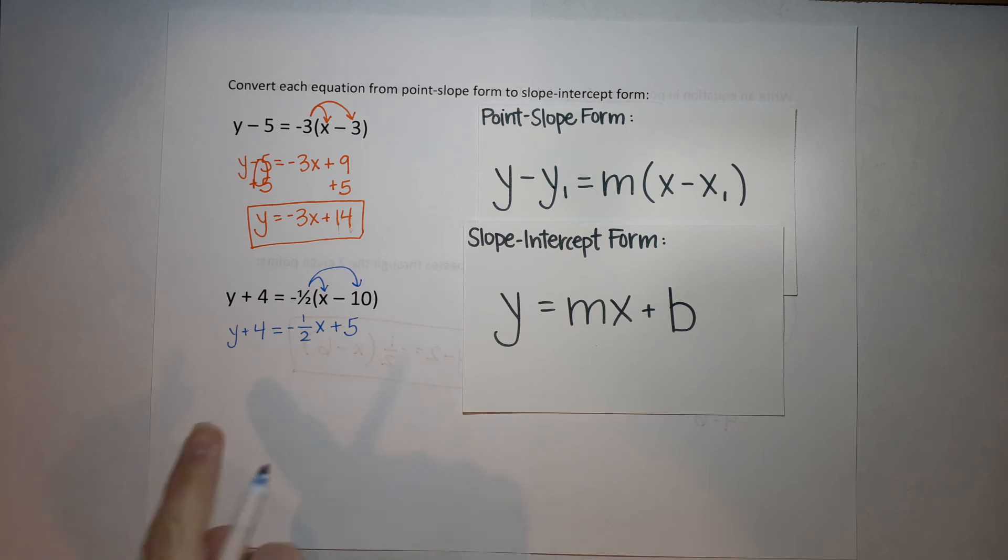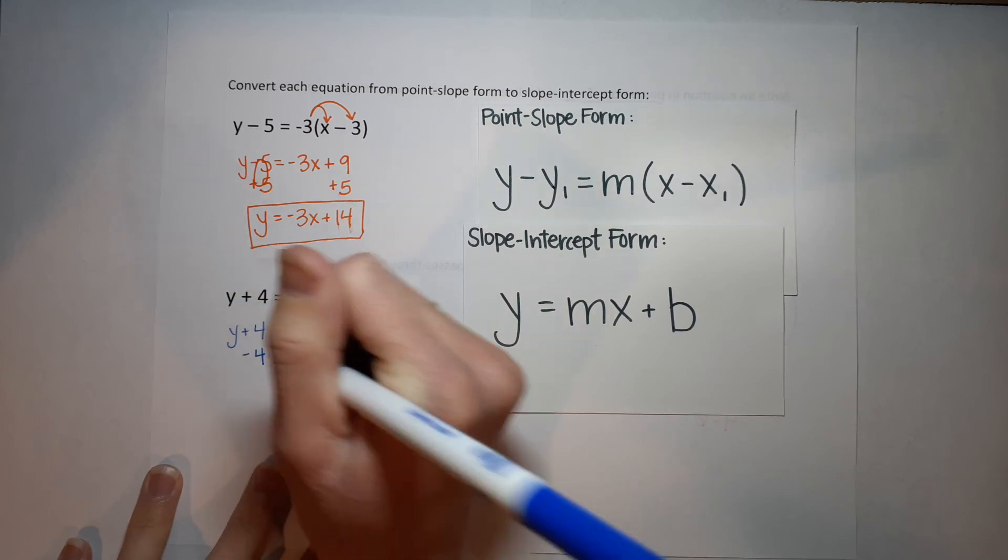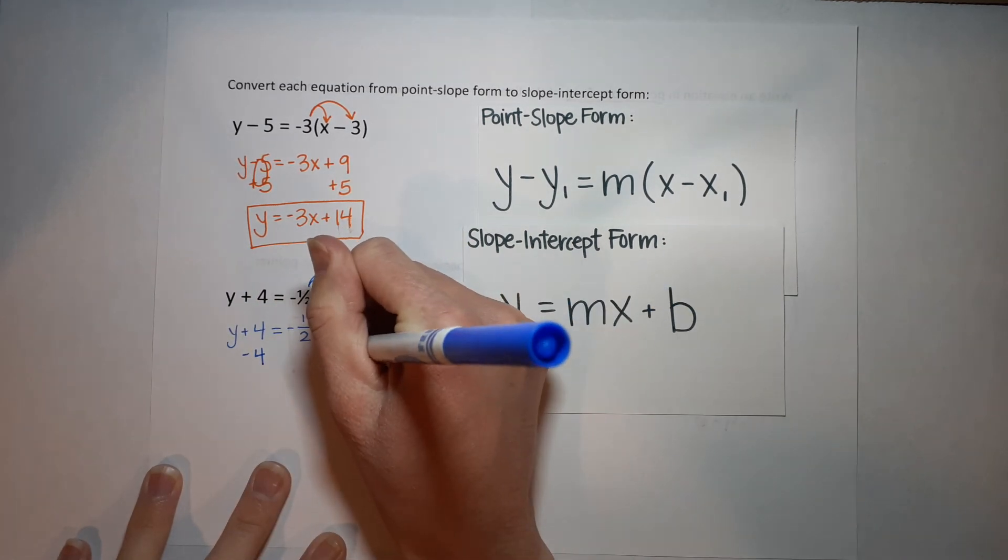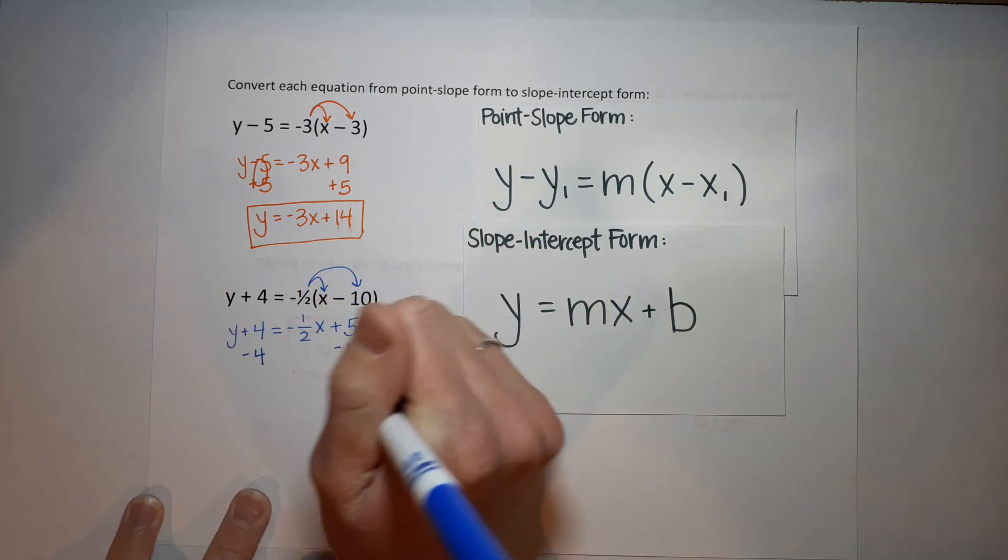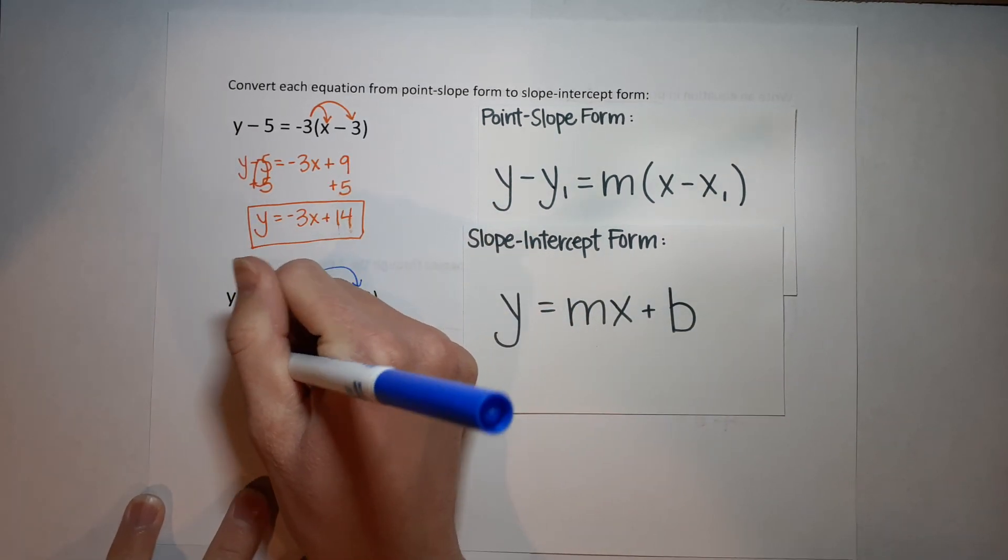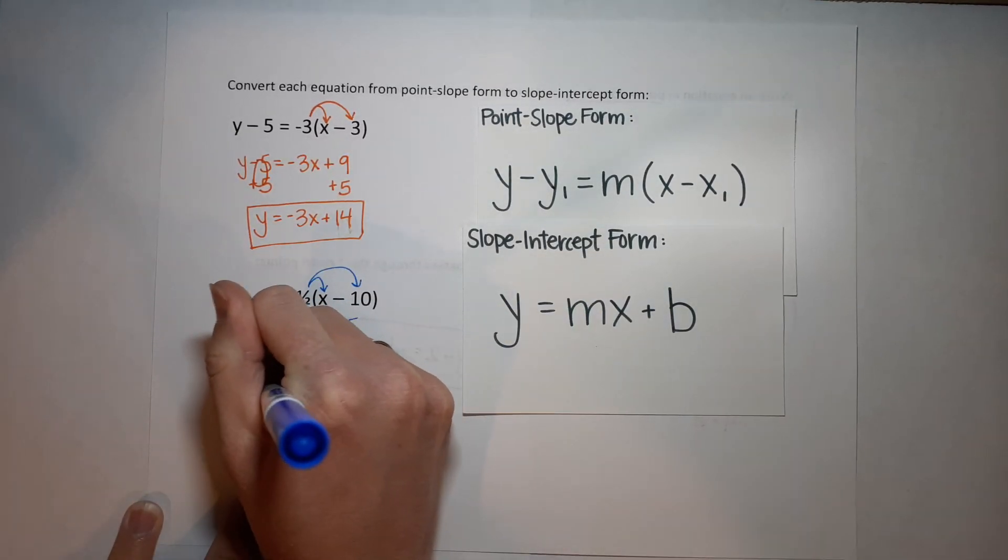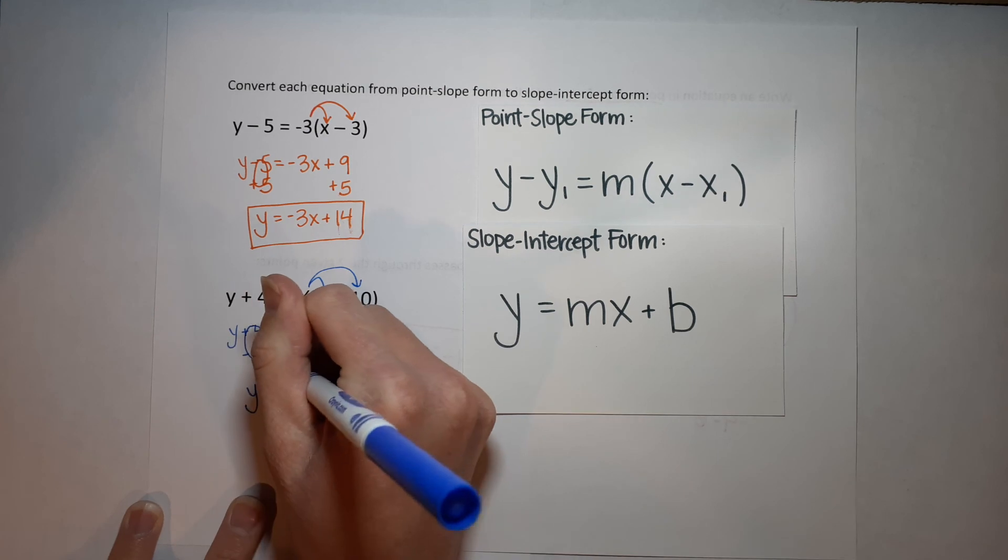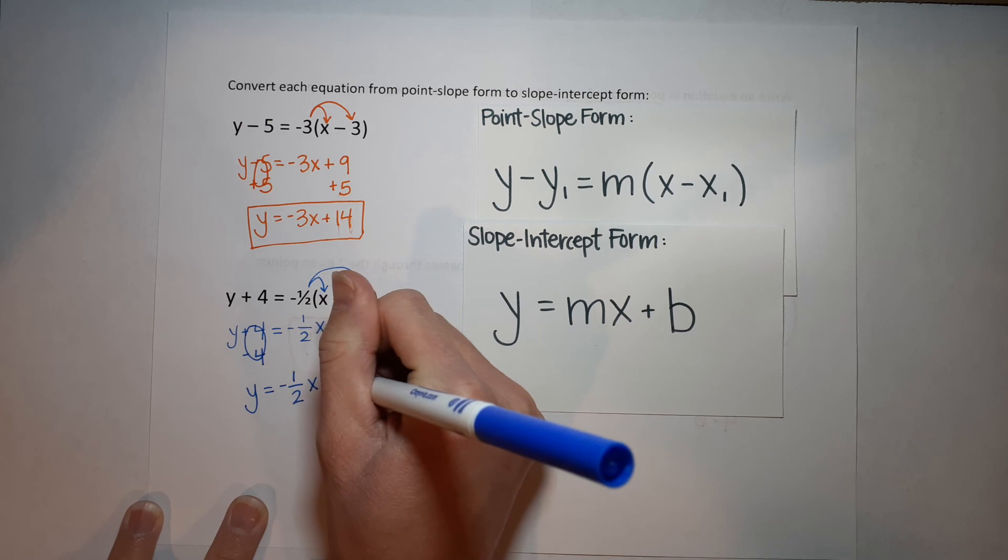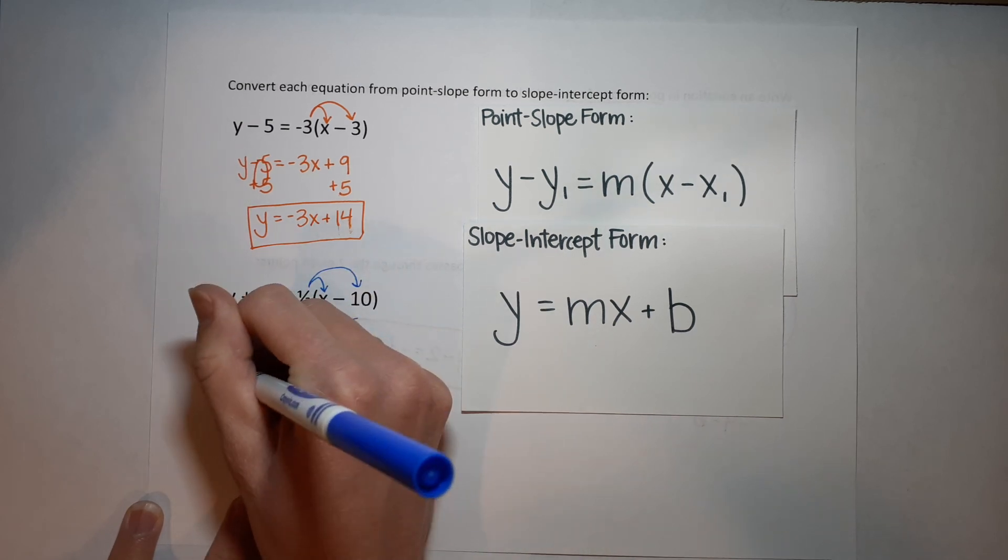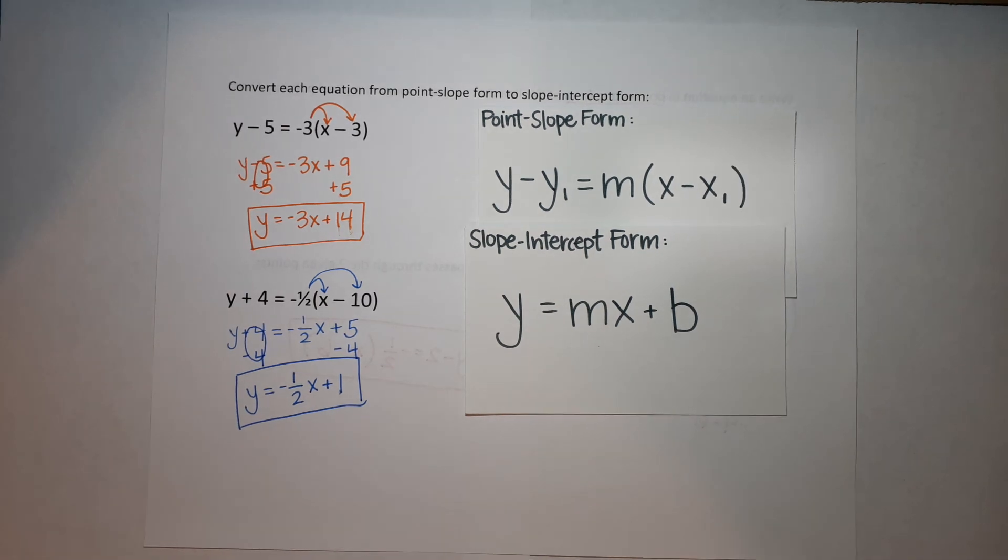Not too bad, right? Almost done. And I want y completely alone. Again, as long as I add or subtract or whatever the same from both sides, it keeps my equation true and balanced. So I'm going to subtract 4 from both sides. These go to a 0. So I'm left with y equals negative 1 half x. 5 minus 4 gives me 1. Guess what? That is slope-intercept form.